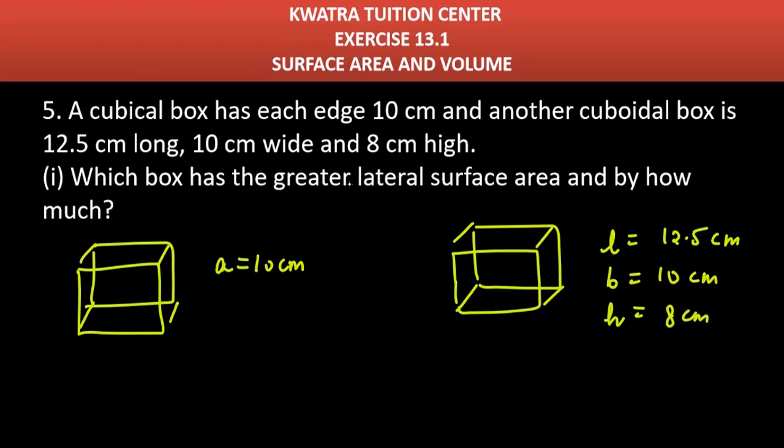Now you have to find the lateral surface area of these two. So you have to know that we have side walls, side faces. How many of these are? 4.